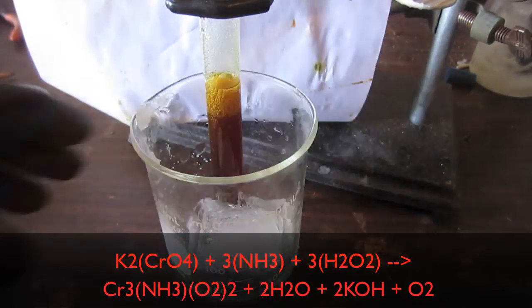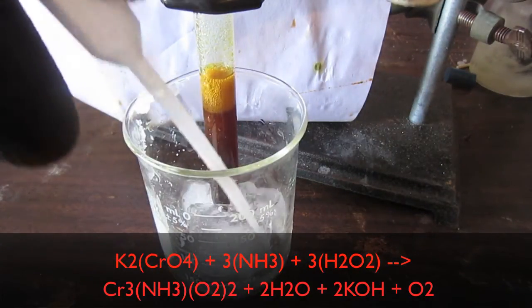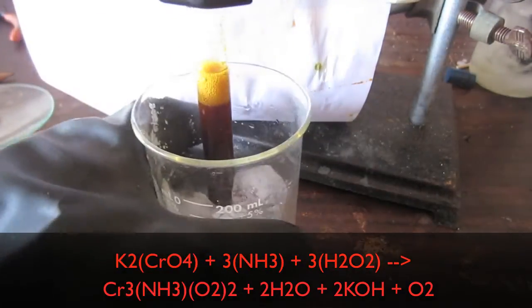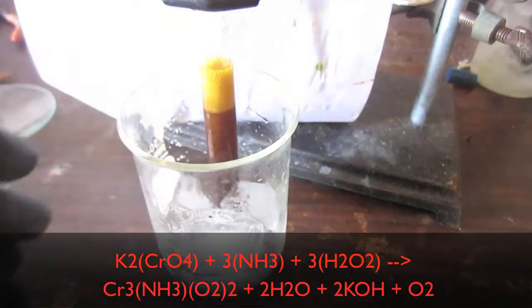What you want to do is form the chromium triamine diperoxide. Since the ammonia is neutral and there are two peroxides, each with a minus 2 charge, and the entire molecule is neutral, the charge on the chromium is plus 4.